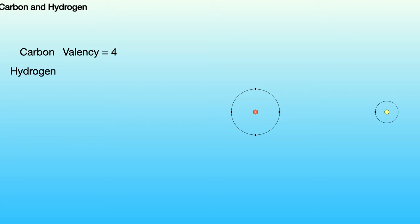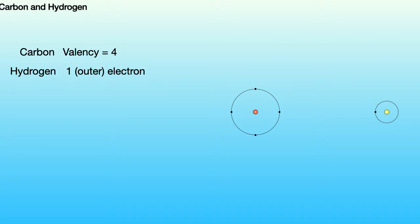Hydrogen has just one electron altogether. The first energy level is the outer energy level, so there we have one outer electron, and the valency will be one. Now, you may have been taught how to write the formula for a compound based on valences, but I'll just remind you.